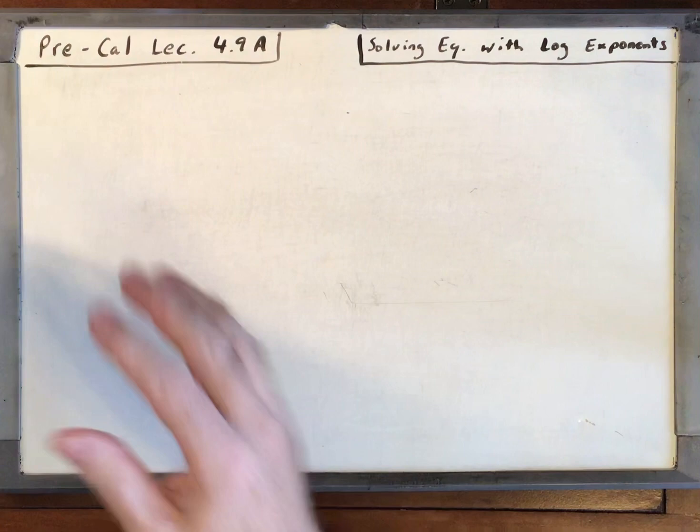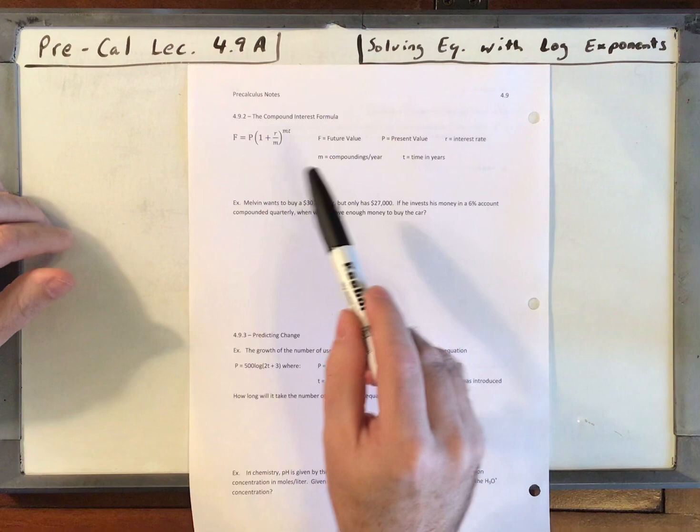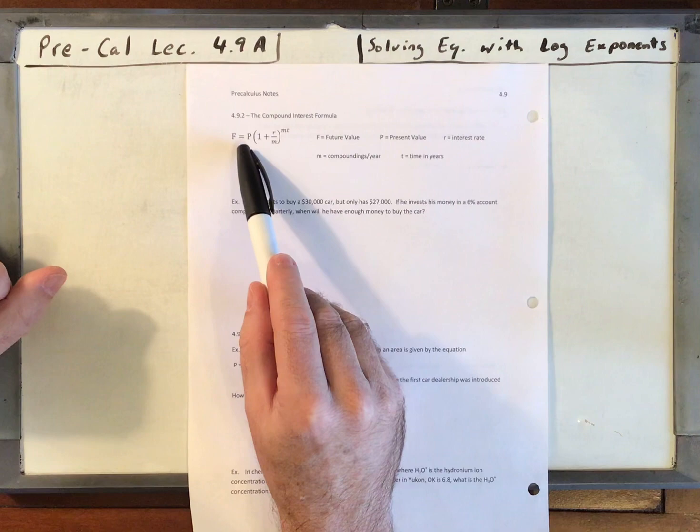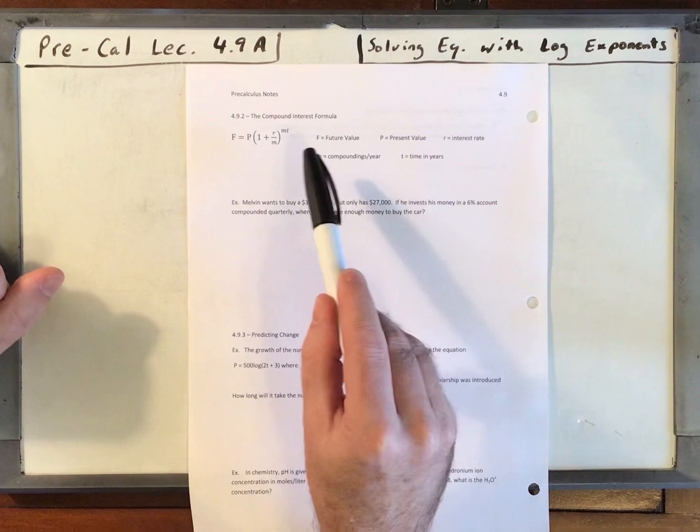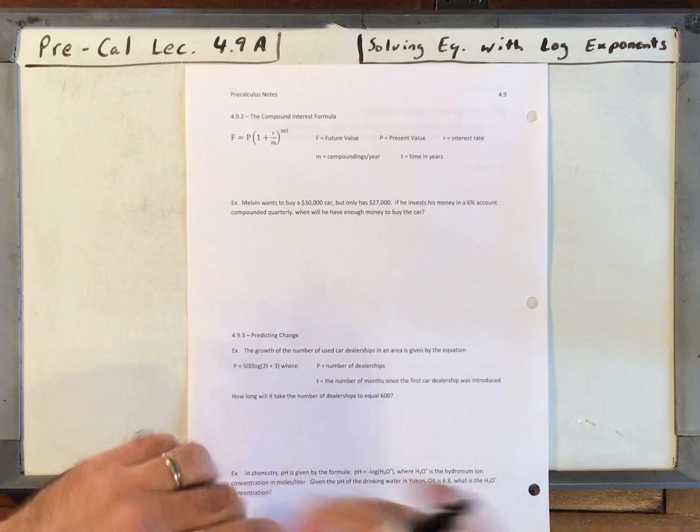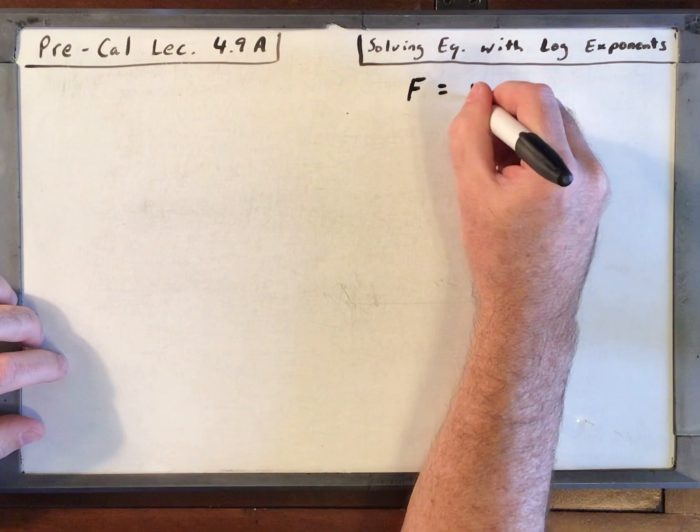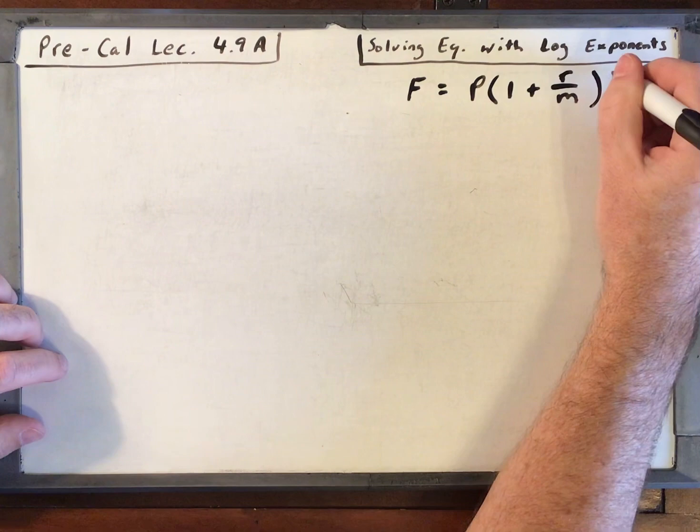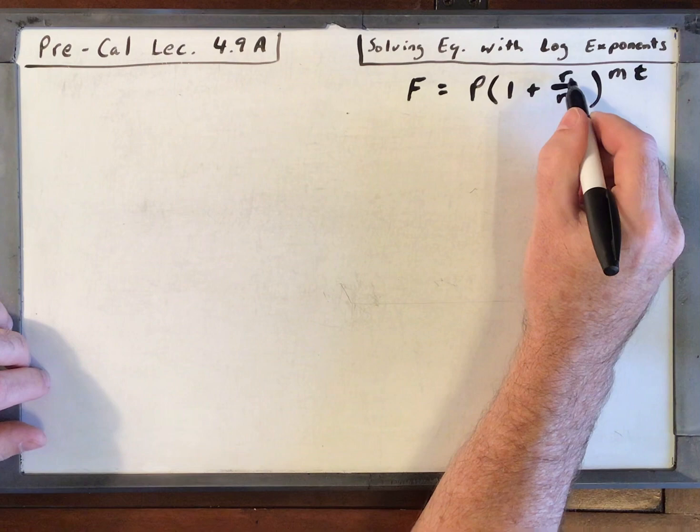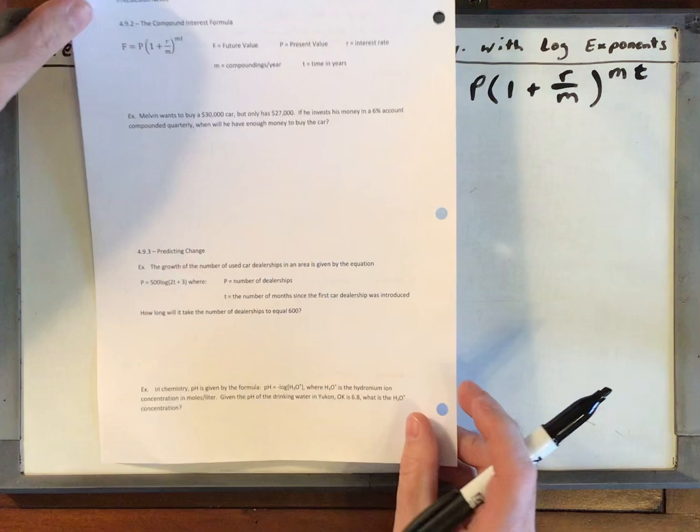Let's turn over your notes. We're going back to our lovely formula, the compound interest formula. We're going to use logarithms. We've solved for f before, we've solved for p before, we've solved for the interest rate. We haven't solved for time yet. Finally, we can use logarithms to solve for time. So I'm going to write our equation up here in the corner. Remember, m is number of compoundings per year, T is time in years, R is rate, future value, present value.